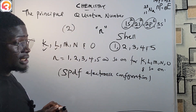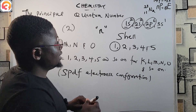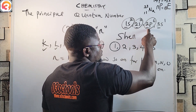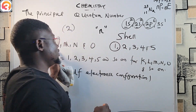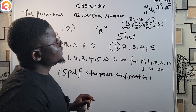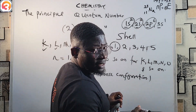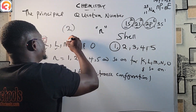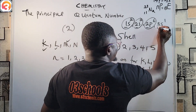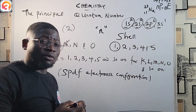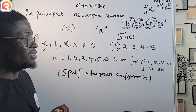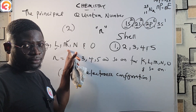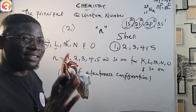The next eight electrons — 2s² and 2p⁶ — correspond to and belong to the L shell, because the principal quantum number here is 2. The last electron, 3s¹, belongs to the M shell, because principal quantum number 3 corresponds to the M shell.